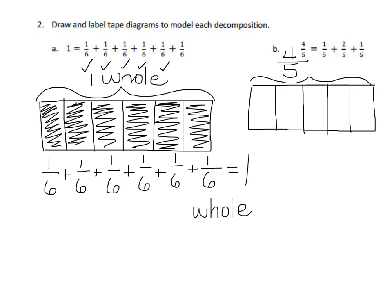My first addend is 1 fifth. Here's 1 fifth. So I'm going to shade in 1 of 5 equal pieces. And I'm going to use a little bracket to show that that represents 1 fifth.